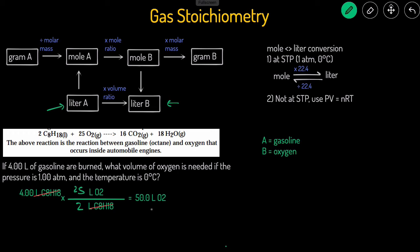Those are the main types of gas stoichiometry problems — grams or moles to volume, and all combinations. At STP use 22.4; not at STP, stop and apply PV = NRT. You can also be asked to go from volume to volume using the mole or volume ratio. Let's do one more example using PV = NRT since that one can get a little confusing.